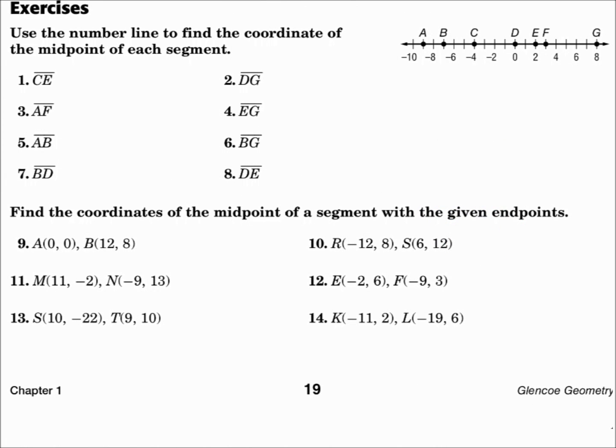Use the number line to find the coordinate of the midpoint of each segment. For segment CE, we're going to use negative 4 and 2. Add the numbers and divide by 2. That's negative 2 over 2, which is negative 1.